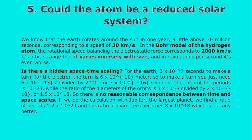It's a bit strange that it varies inversely with size, and in revolutions per second it's even worse. For the Earth: 3 × 10⁷ seconds to make a turn. For the electron, the orbit is 6 × 10⁻¹⁰ meters, so to make a turn you just need 6 × 10⁻¹⁰ divided by 2,000, or 3 × 10⁻¹⁶ seconds. The ratio of the periods is 10²³, while the ratio of the diameters of the orbits is 3 × 10⁸ divided by 2 × 10⁻¹⁰, or 1.5 × 10¹⁸.